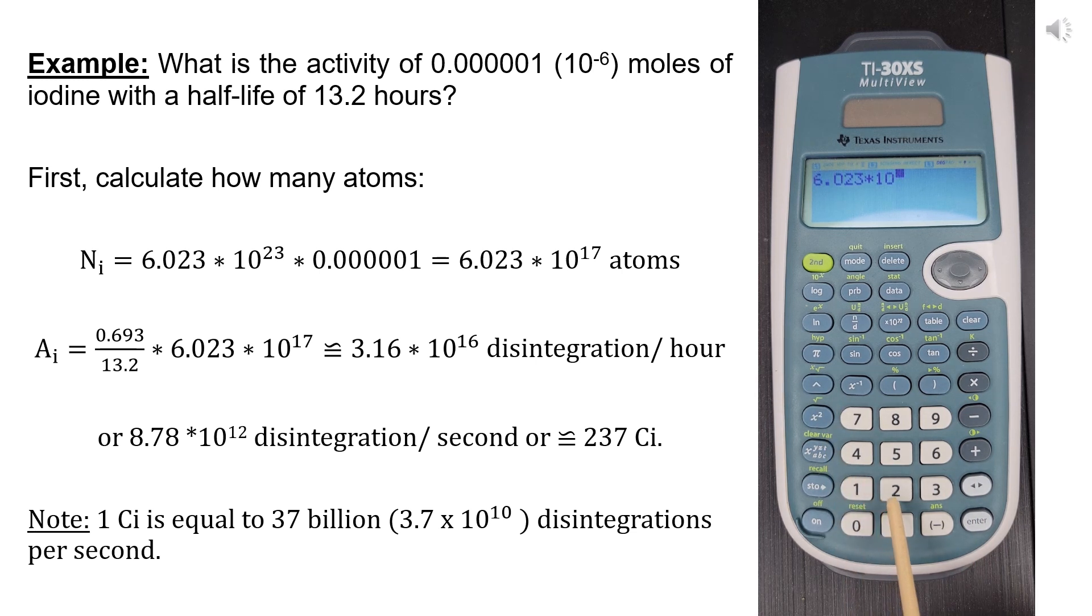Then we multiply the result by (0.693 divided by 13.2), which equals approximately 3.16 times 10 to the power 16 disintegrations per hour, which we divide by 3600 because there are 3600 seconds in an hour, and equals approximately 8.78 times 10 to the power 12 disintegrations per second, which is approximately 237 curies.